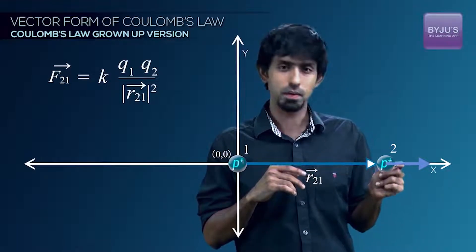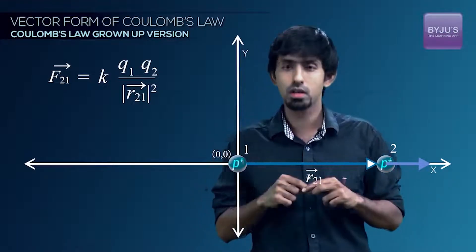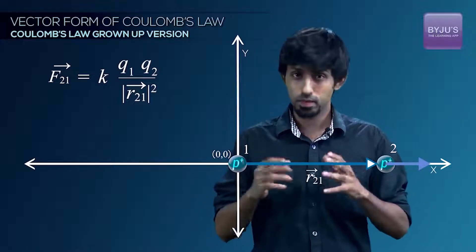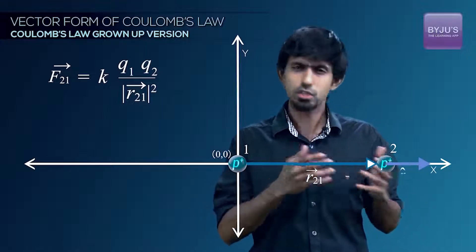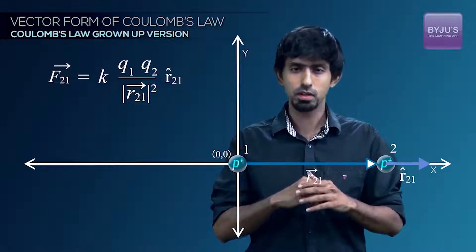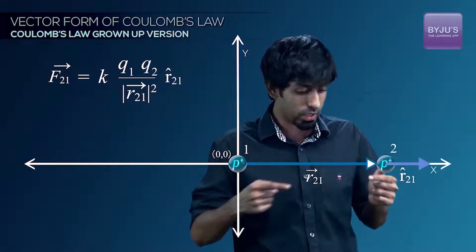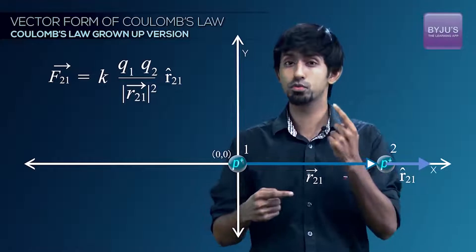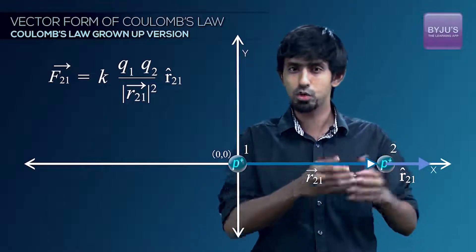So we need a vector in the same direction as your R21 vector. Let's call that R21 cap. Let's put it there, just for us to remember that's a vector in the same direction as R21 with a magnitude of 1. But what's the value going to be?